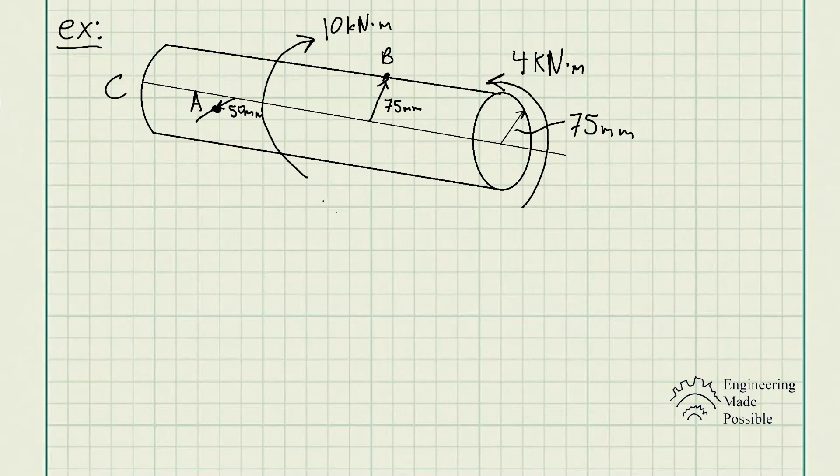So here we have this rod here and we have a torque being applied close to the center here, 10 kN·m. And at the very end, we have another torque being applied, 4 kN·m.